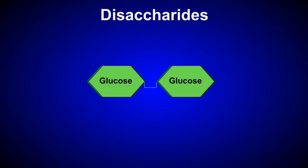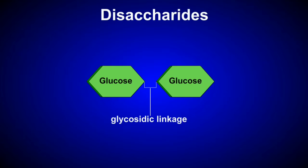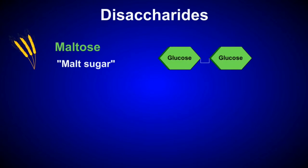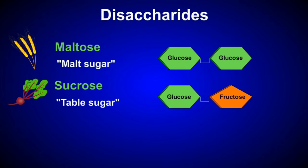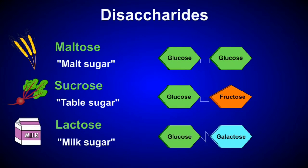Disaccharides are formed when monosaccharides are joined together through dehydration reactions, forming what are called glycosidic linkages. Common disaccharides include maltose, which is made up of two glucose molecules; sucrose, also known as table sugar, which is made up of glucose and fructose; and lactose, or milk sugar, which contains glucose and galactose.